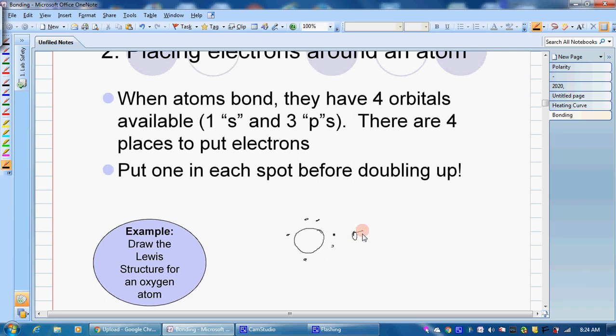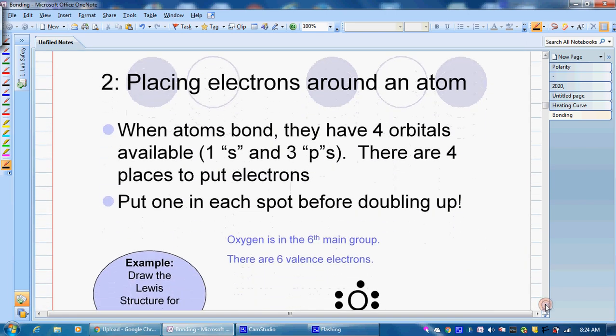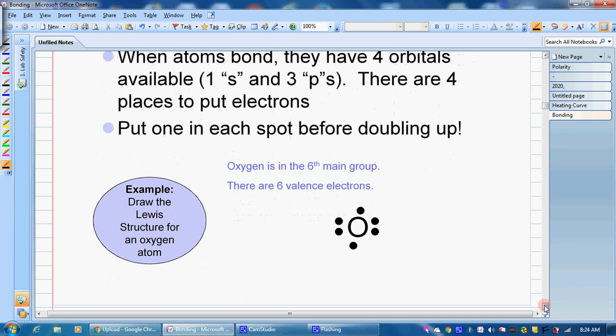So we would put one, and then we would go back and double up like that. You could also put two on each side. It just depends on your preference. This is perfectly acceptable also. As long as you're showing six valence electrons, you're good to go. But we do consider this four different orbitals. So again, you could write it this way, and this would be acceptable also.